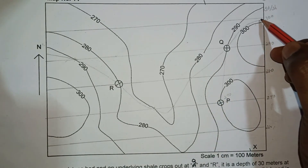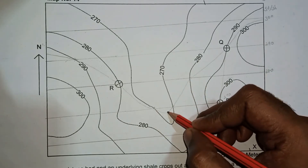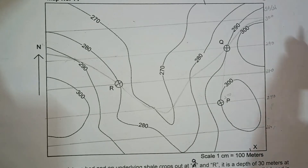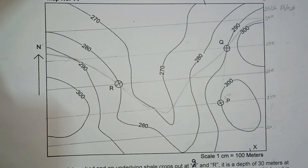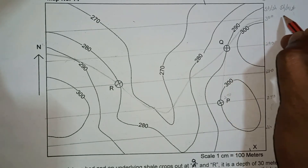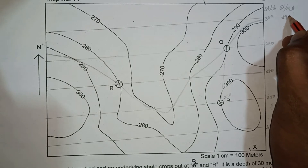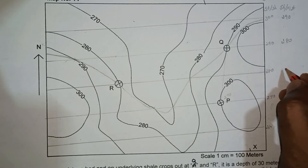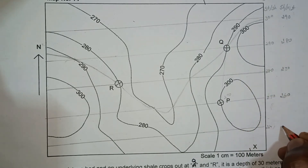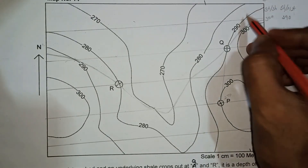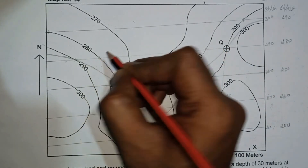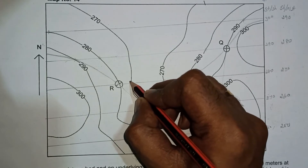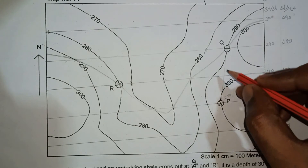The first boundary — sandstone and shale — is now drawn. Next, mark the shale and mudstone boundary. The shale thickness is 10 meters, so it lies below the sandstone. This means the strike values for this boundary shift down by 10 meters: 290 becomes 280, then 270, 260, and so on. Find the intersection points at 290, 280, 270 — 260 is not coming — and connect these points.